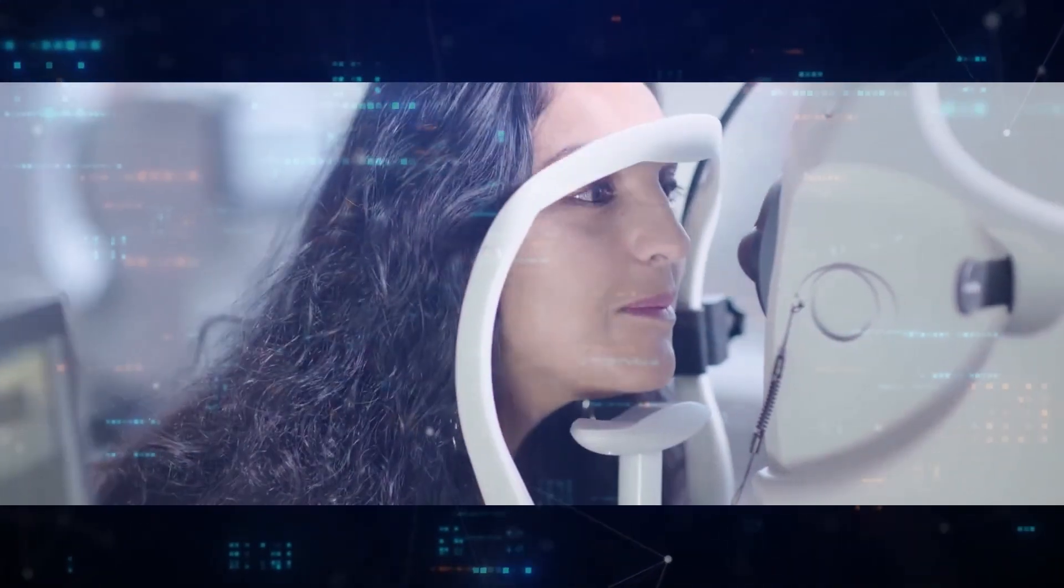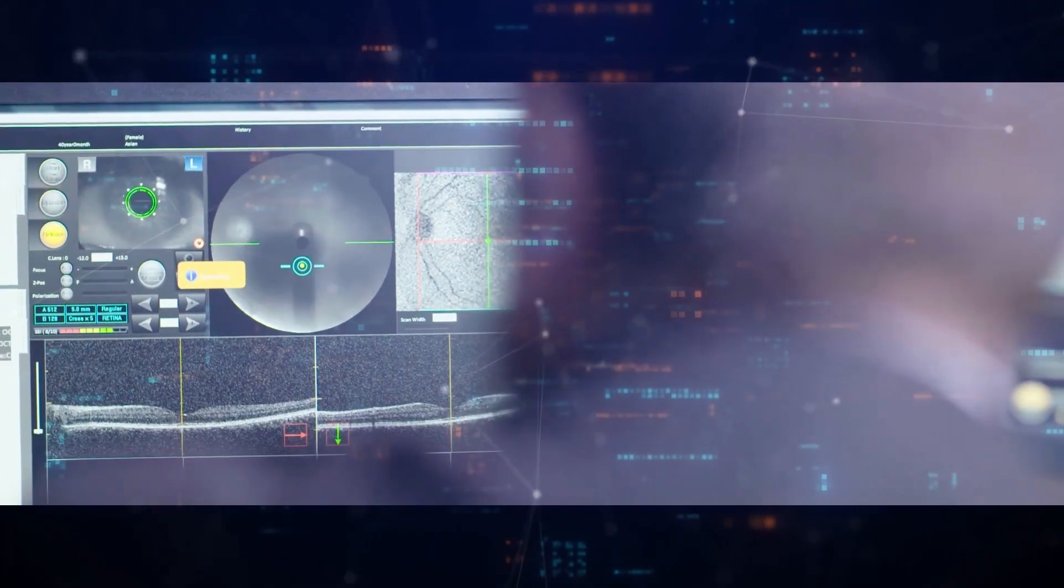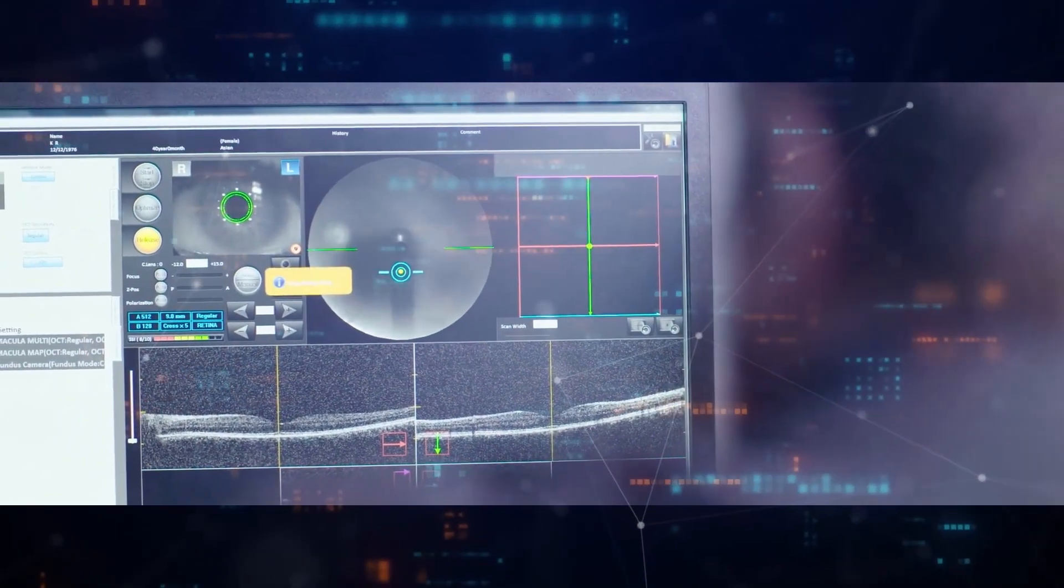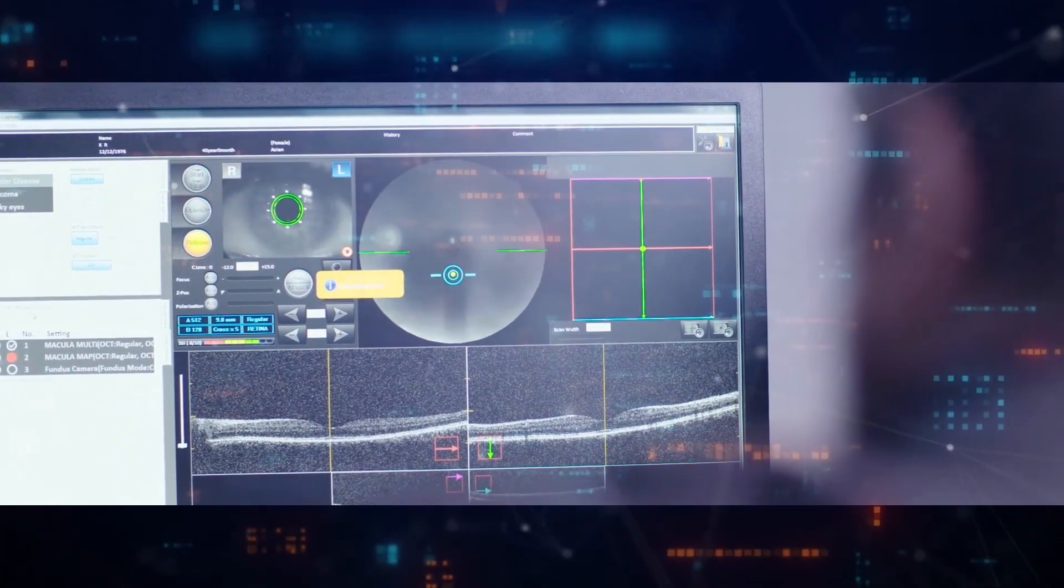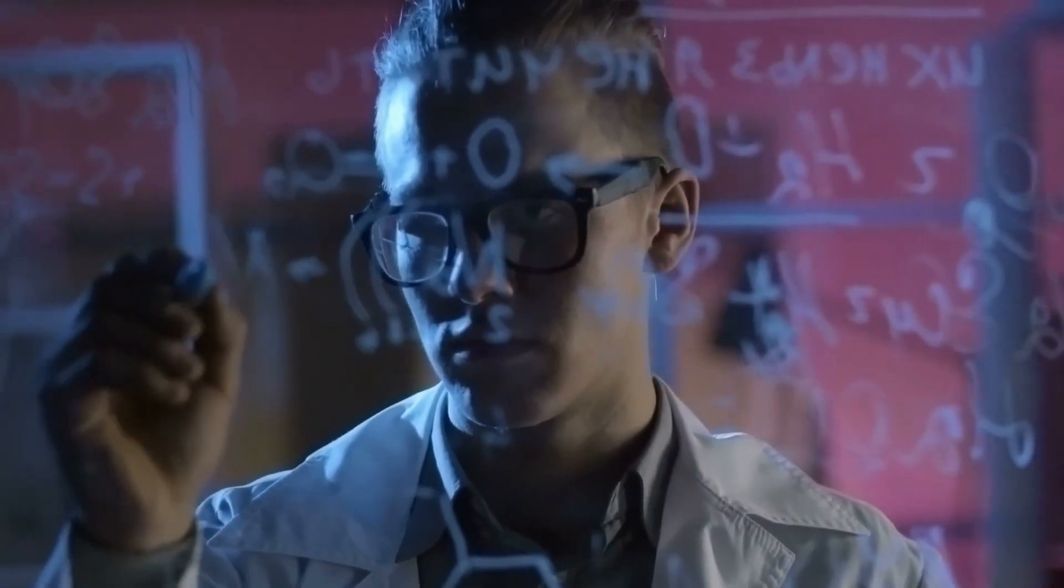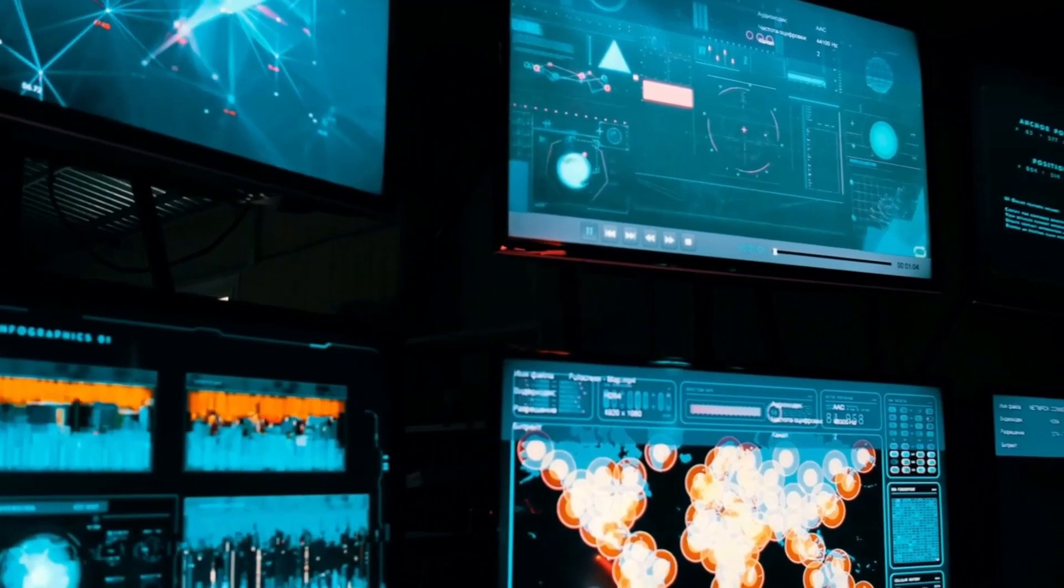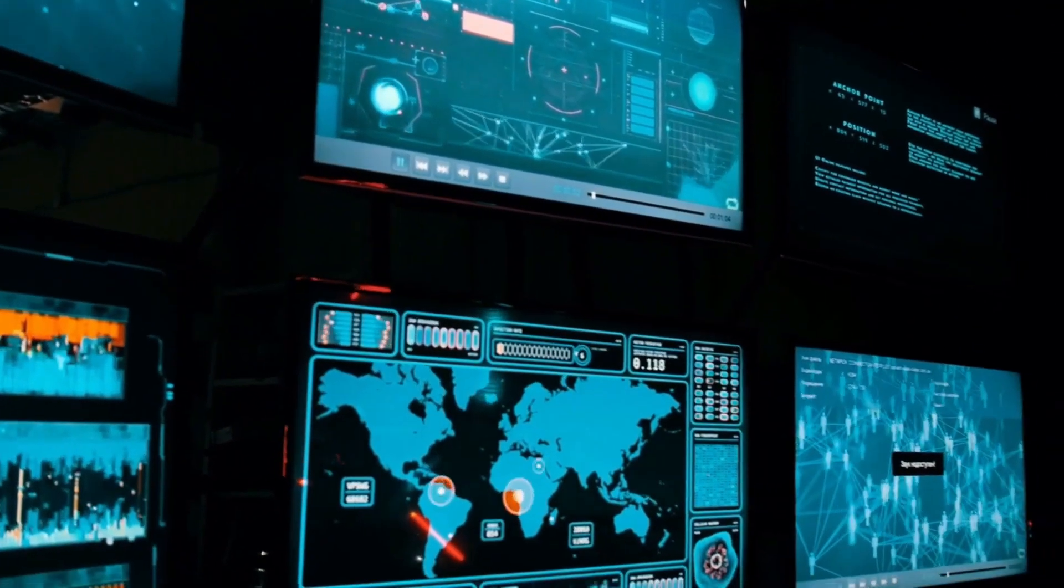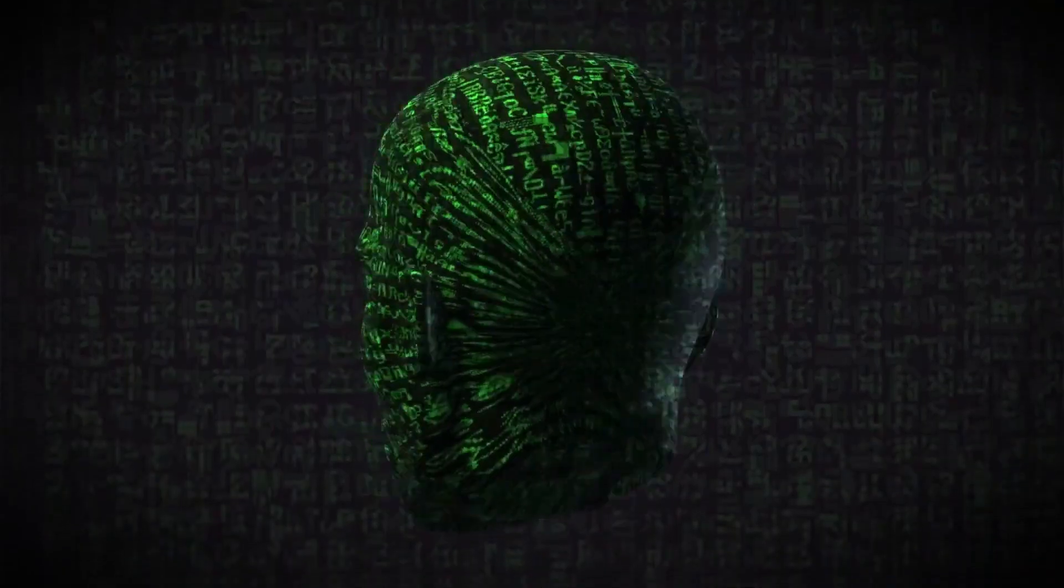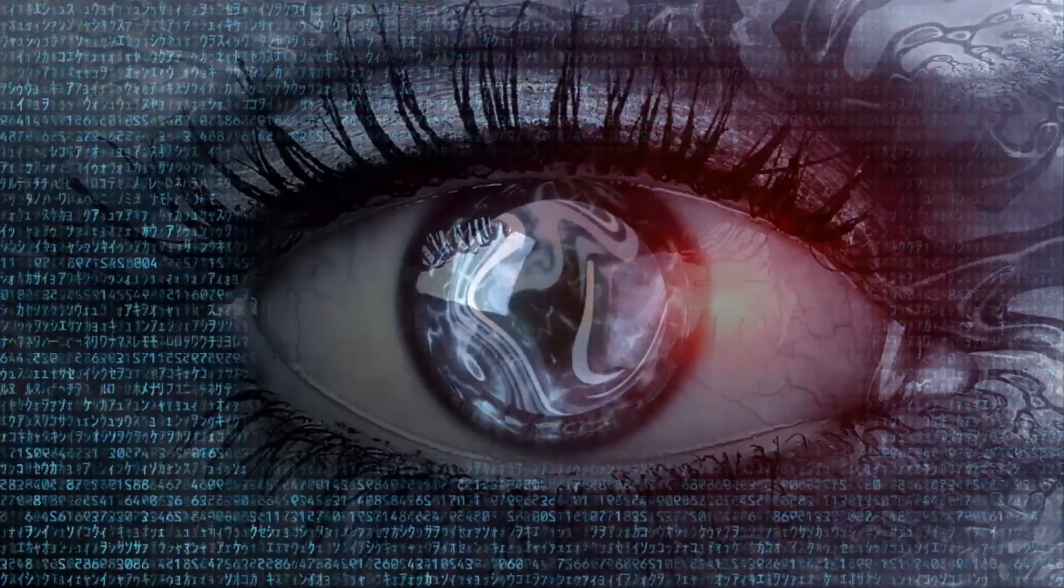Now, let's talk about the how. How do you even begin to scan every eyeball on Earth? Well, it starts with an algorithm, a set of instructions that can teach a machine to recognize and interpret the unique patterns and characteristics of the human eye. This algorithm, powered by the vast computational resources of OpenAI and backed by that $100 million funding, will be capable of learning from a database of scanned eyes, getting smarter and more accurate with every new entry.